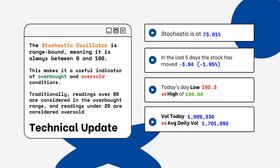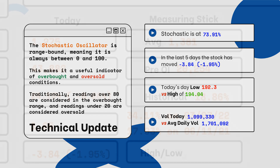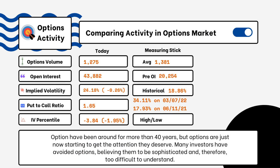We've also provided today's volume of shares traded and the average daily volume. You want to see how much volume is being traded and if it is above or below the average daily volume level. This tells you how relevant the move is from the stock today.